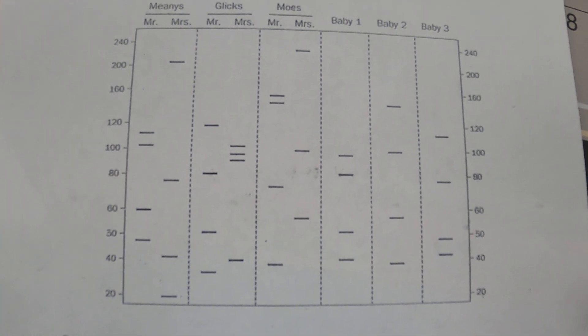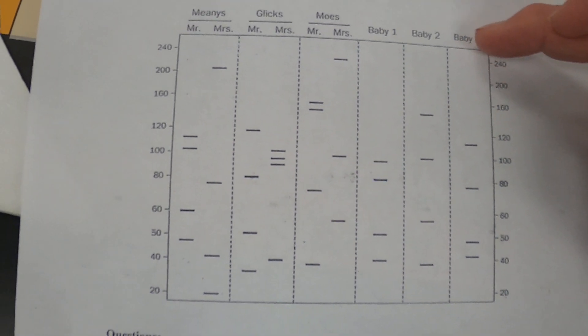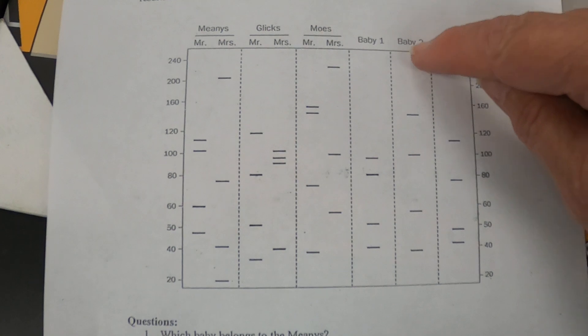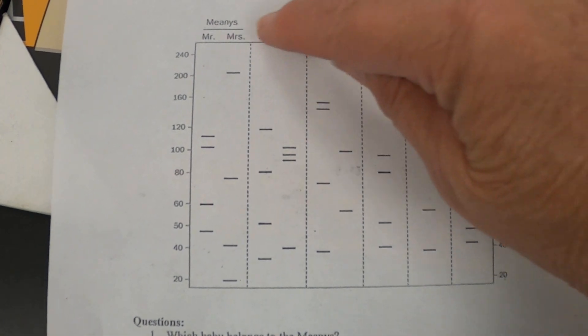This is a thing called who are the parents. So what we're trying to do here is we're trying to match up baby three, two, and one with either the meanies, the glicks, and the mows.